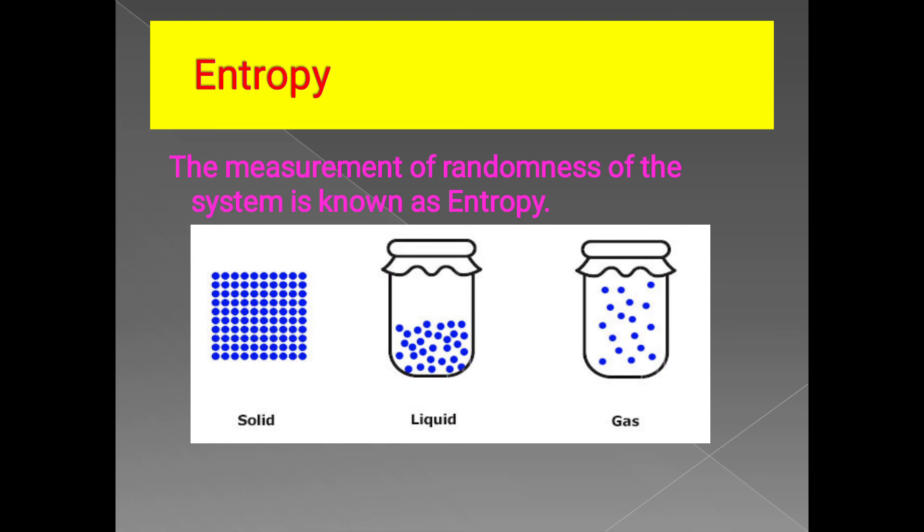Entropy. It is the measurement of randomness of the system, or we can say that it is the measurement of disorder of the system. Look at the diagram here. As you see in the diagram, it suggests a measurement of how much randomly the molecules are moving in a system.